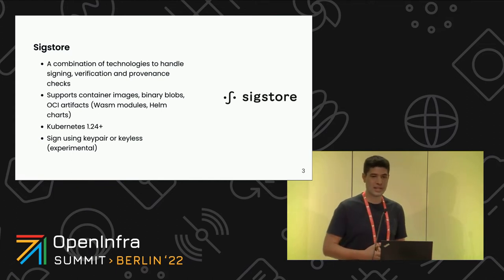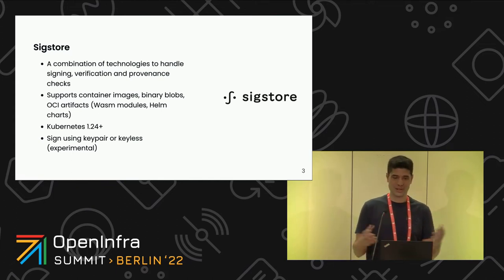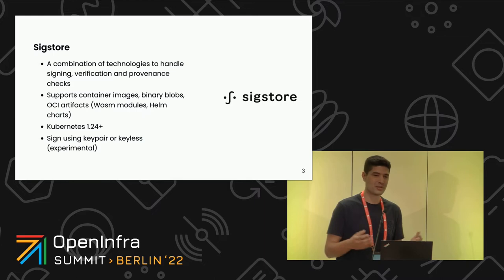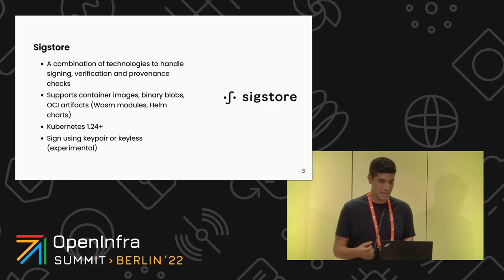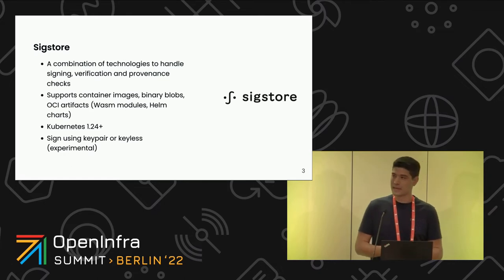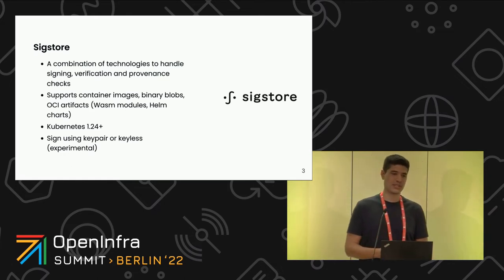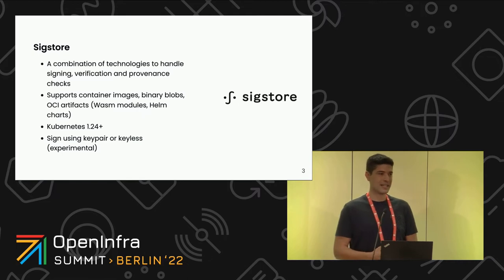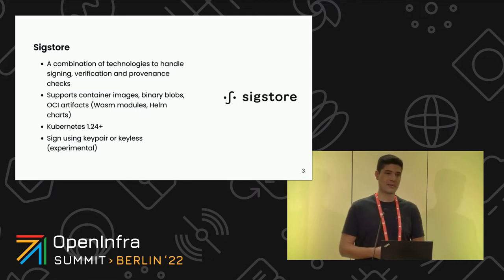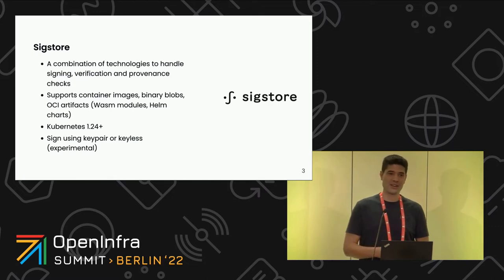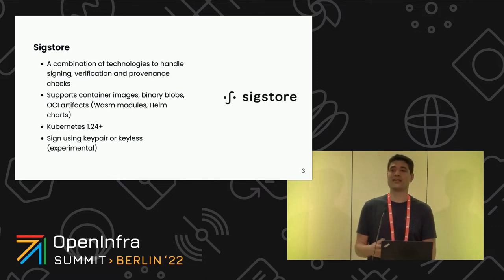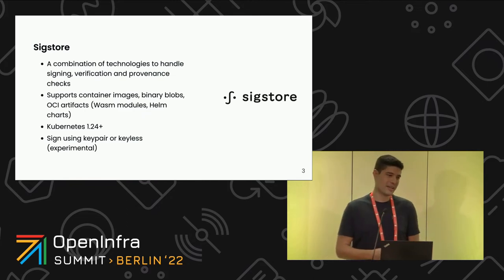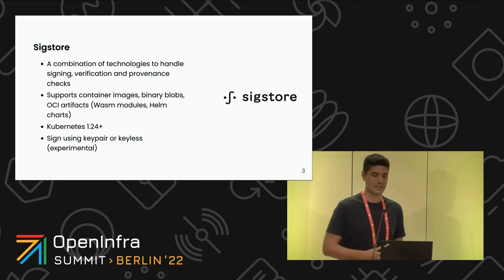In addition to container images, you can sign almost anything — any binary blob, any OCI artifacts such as WASM modules and Helm charts. We're seeing a lot of adoption. Even Kubernetes itself started signing all their artifacts with Sigstore starting on version 1.24. That means you can verify not just your own images, but also third-party images if they're using Sigstore.